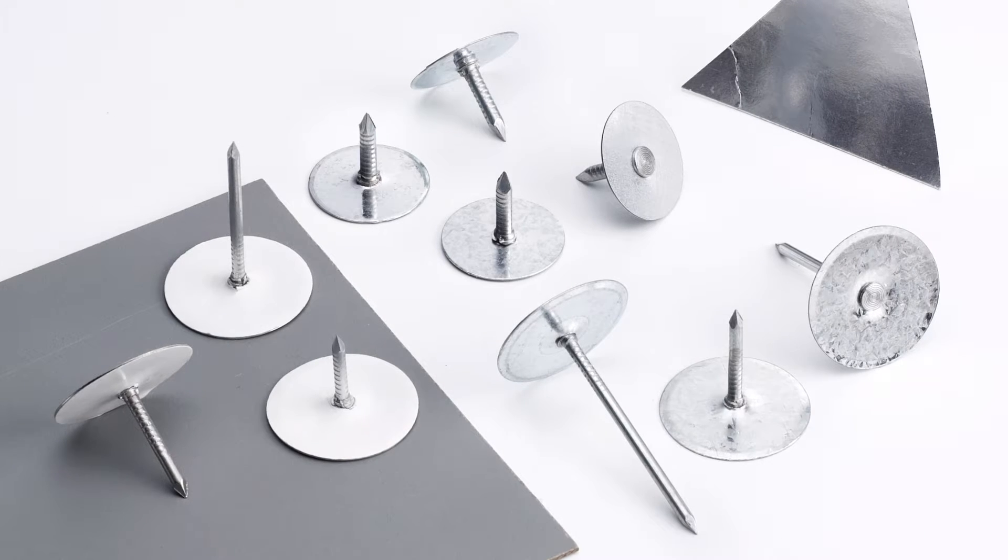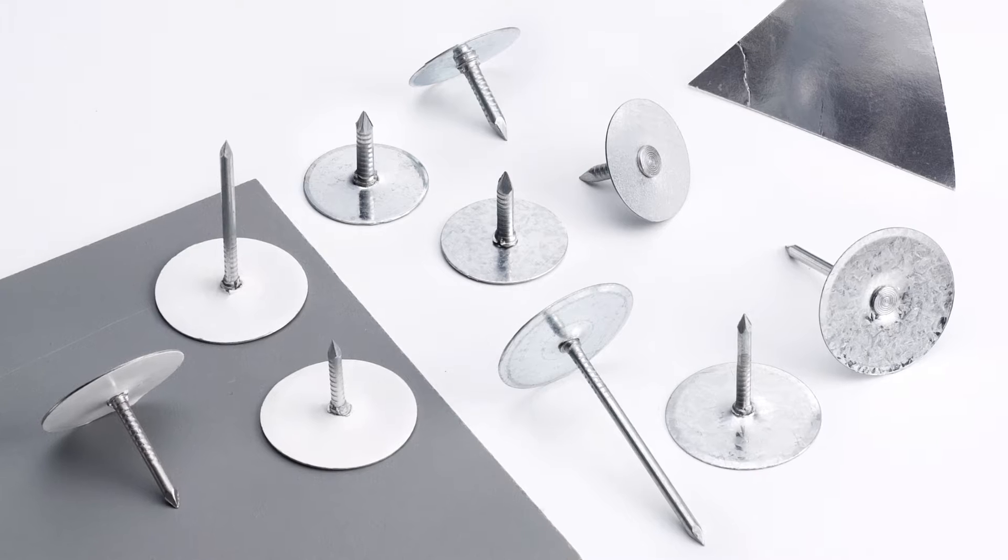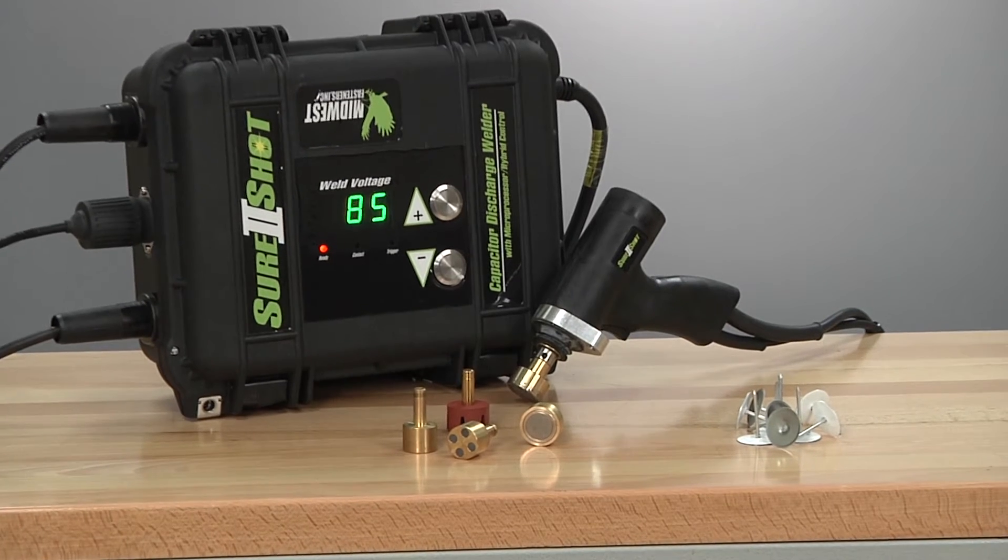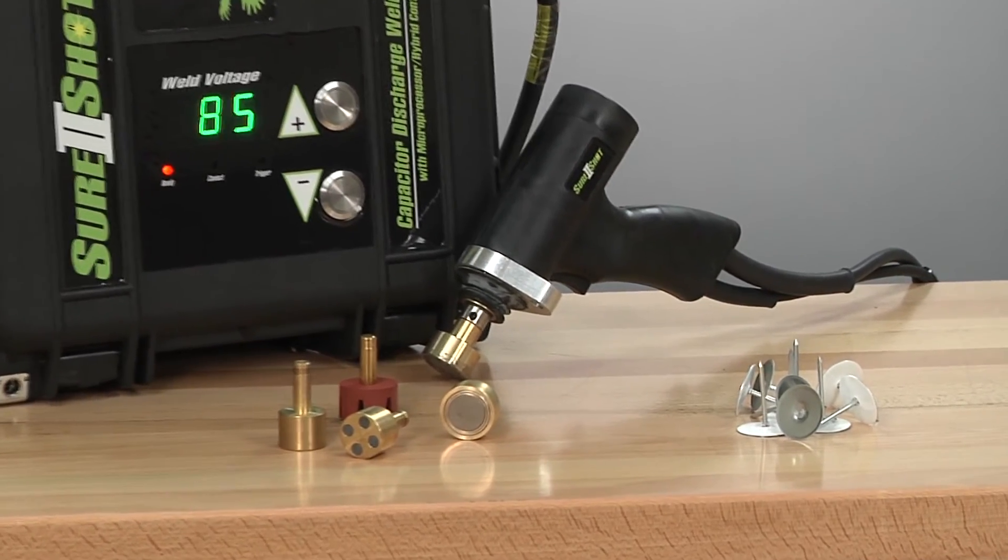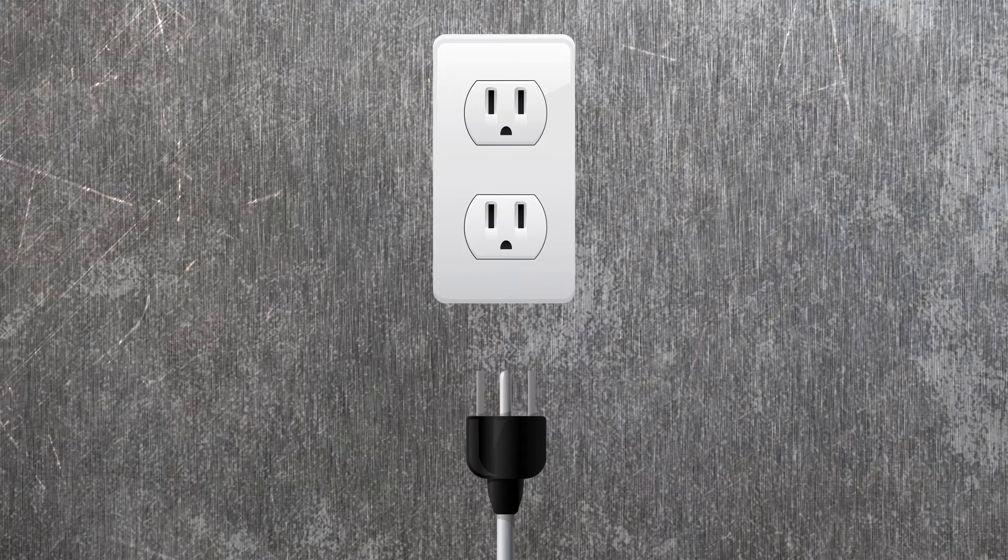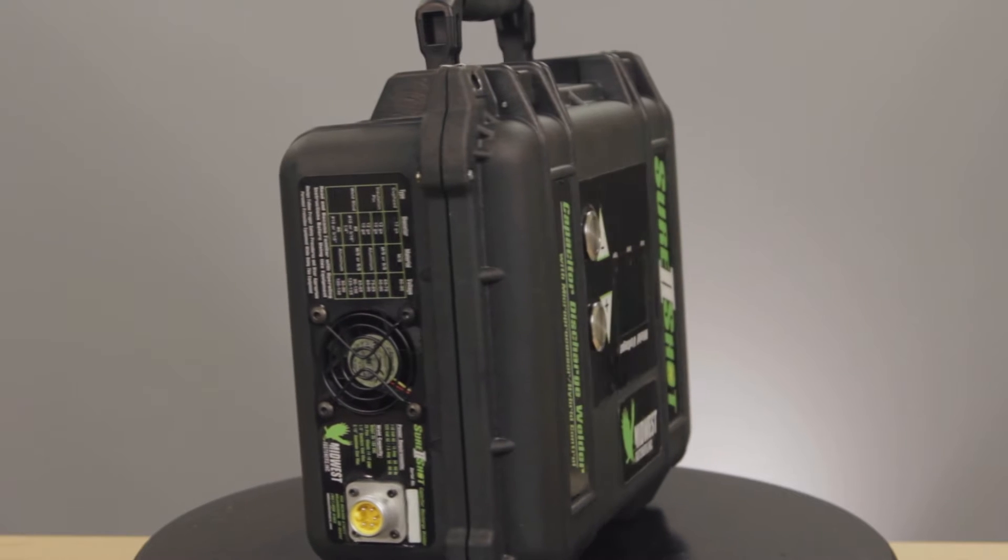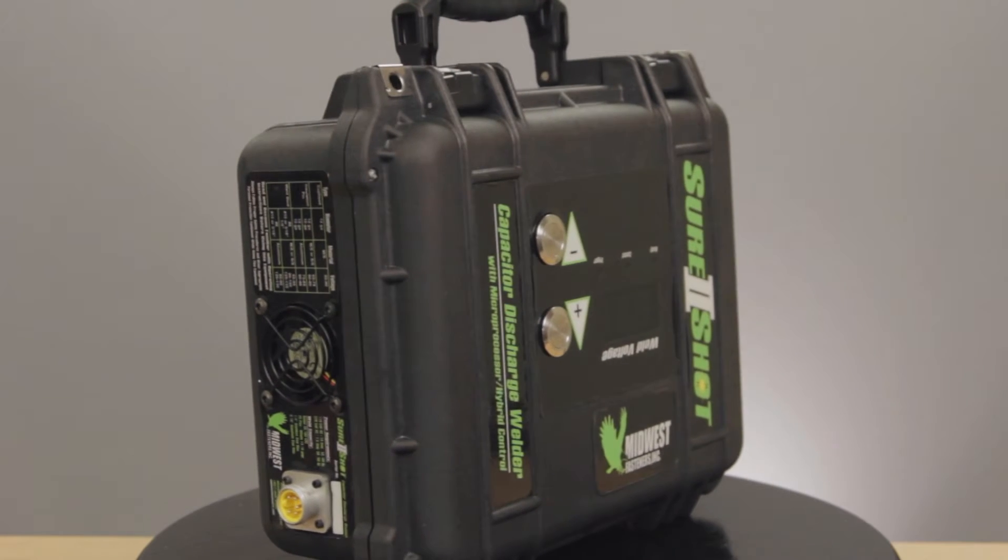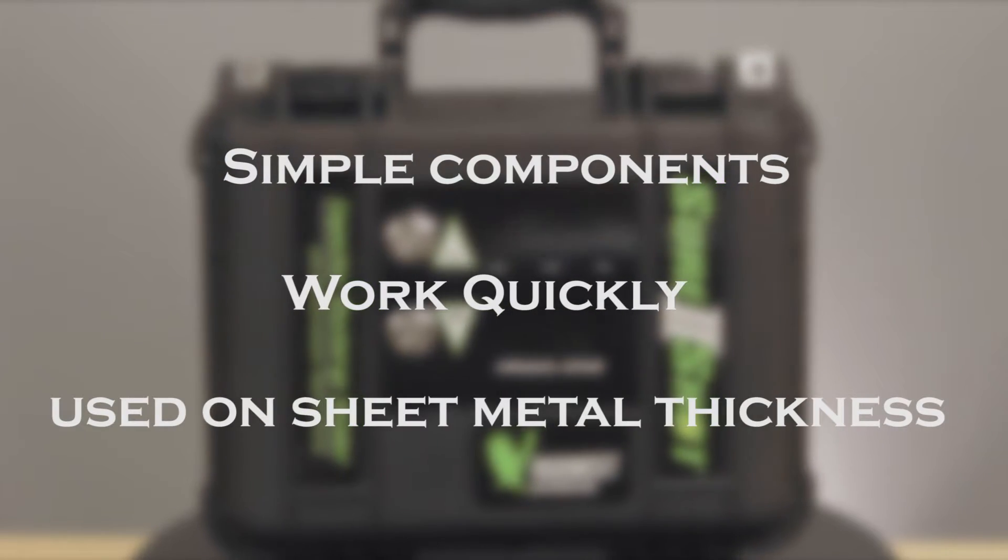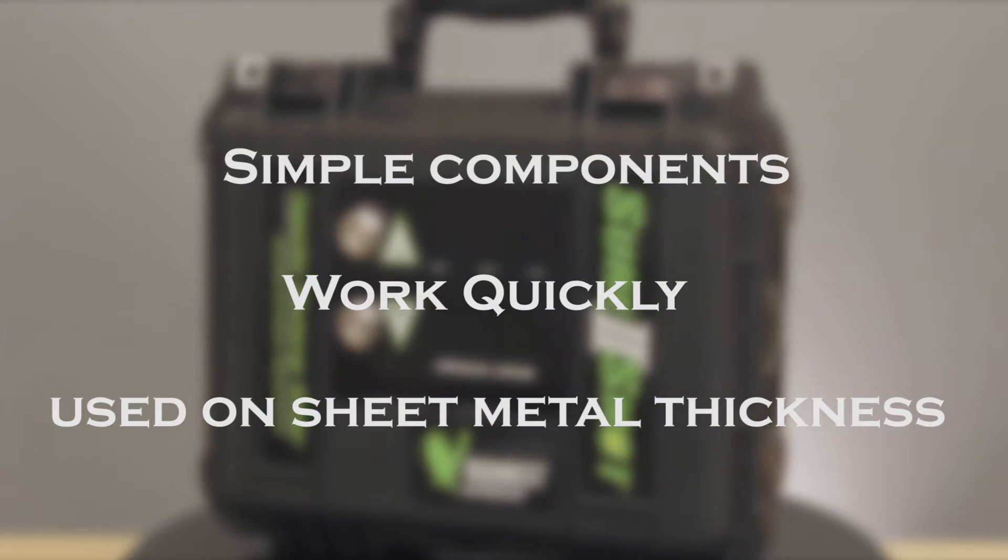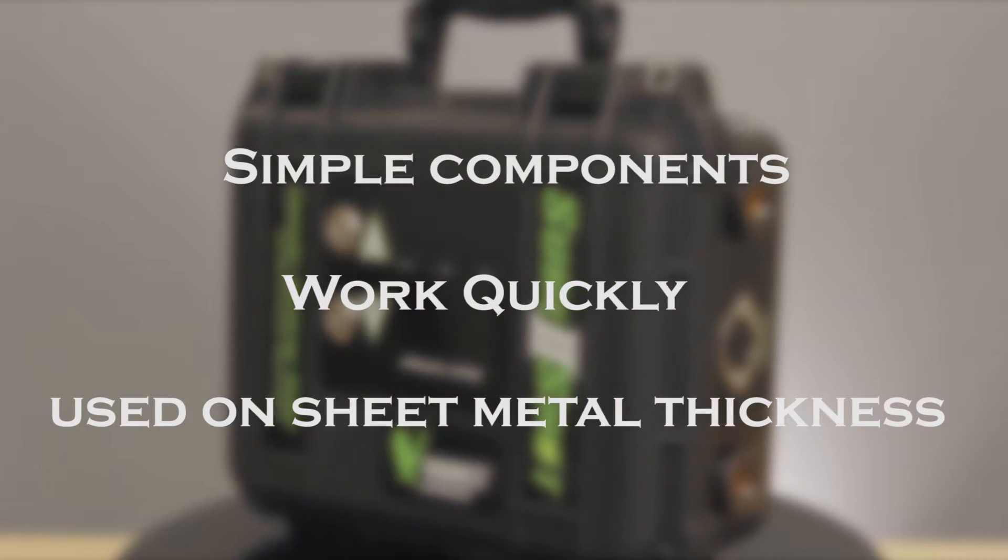Cuphead Weld Pins, sometimes called mini-cups, can be applied using capacitor discharge stud welding. This process is often called CD welding for short. It's a portable welding process which uses readily available electric power from an everyday 110-volt outlet. In addition to being portable, CD welding systems have simple components, work quickly, and can be used on sheet metal thickness material to apply cuphead weld pins and a variety of welded fasteners.